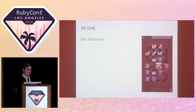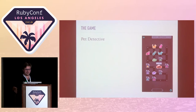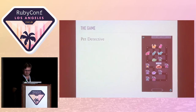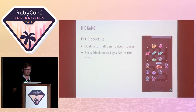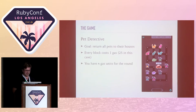So the game — this is a Lumosity game. If you haven't used our app before, we have about 35 or so mobile games, also on desktop. These are brain games designed to help you improve your problem-solving skills. Pet Detective is a pretty simple game. Your goal is to return all pets to their houses. You can see on the screen a number of pets and their houses — the image of the pet appears on the front of the house. You have a car that drives around picking pets up and dropping them off. Every block you travel on the black road costs one gas, and you have a limited number of gas units for the round. If you run out of gas before dropping off all the pets, you lose the round.